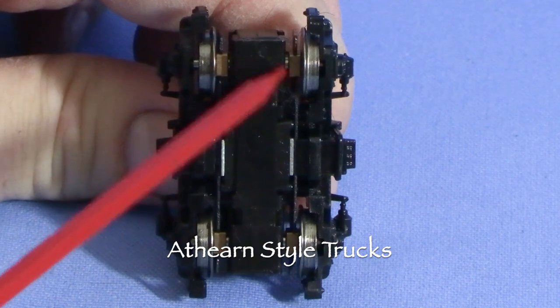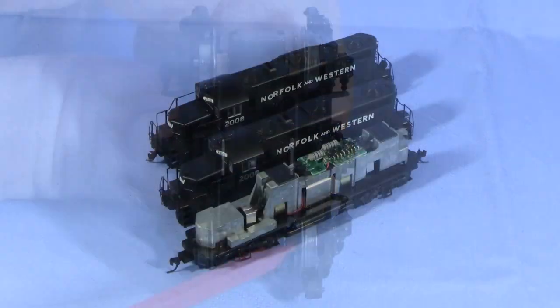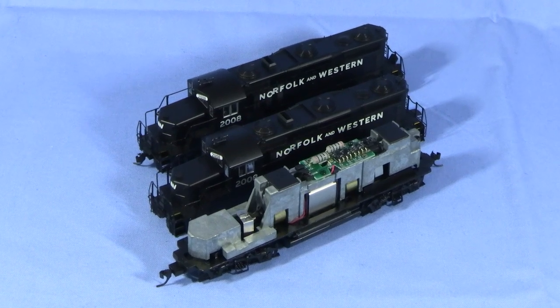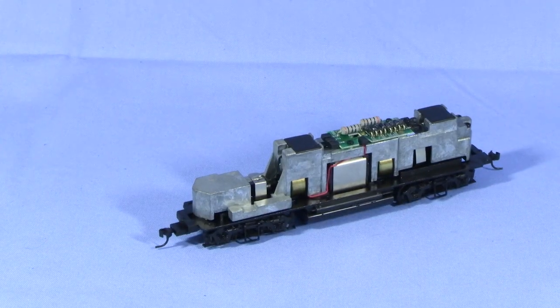This model has the Athern style inside bearing trucks. Since both GP20s are actually models of the same engine, to avoid confusion I'm going to put the shell away and just deal with the chassis for this one.